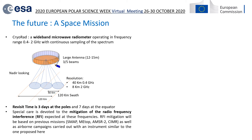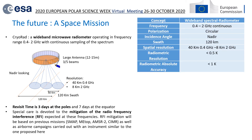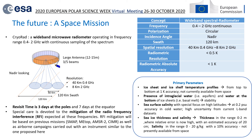Special care is devoted to the mitigation of radio frequency interference, which affects these bands. Here are the main characteristics of the radiometer and the parameters we plan to measure: ice sheet and ice shelf temperature profile, the presence of intraglacial water and water at the bottom of ice sheets and ice shelves, sea surface salinity with high precision, and sea ice thickness and salinity — which are not currently measured from space.